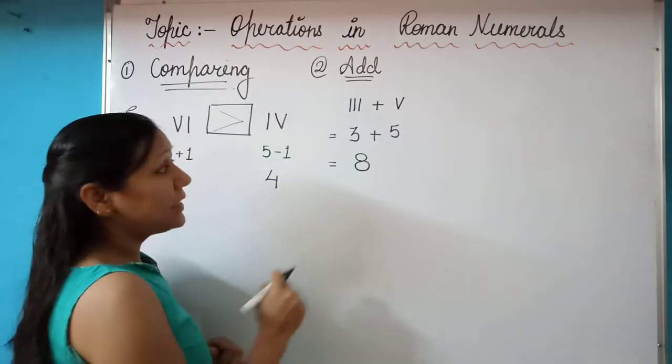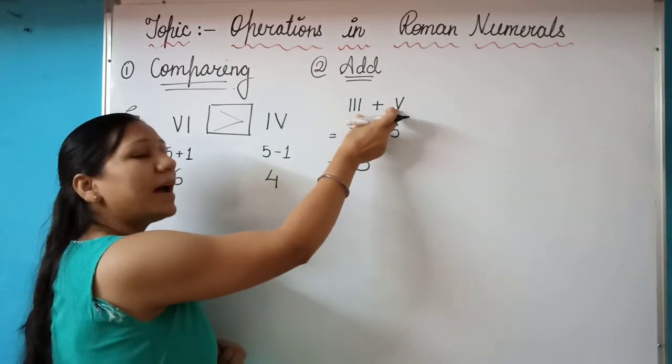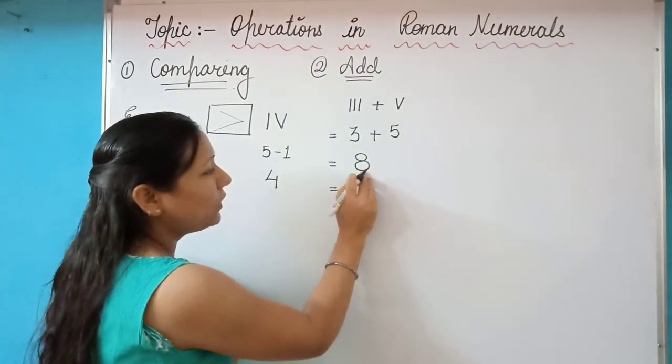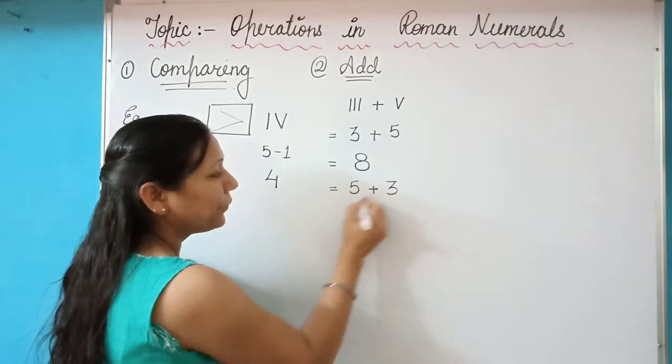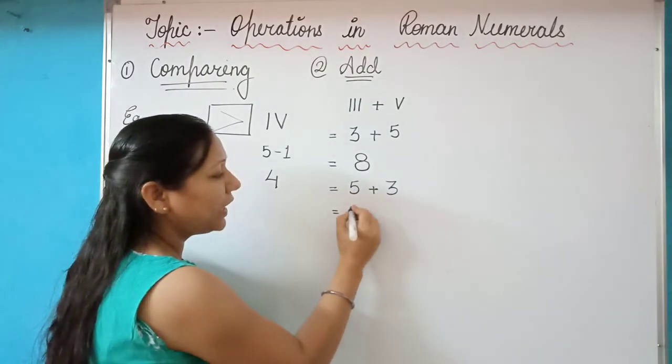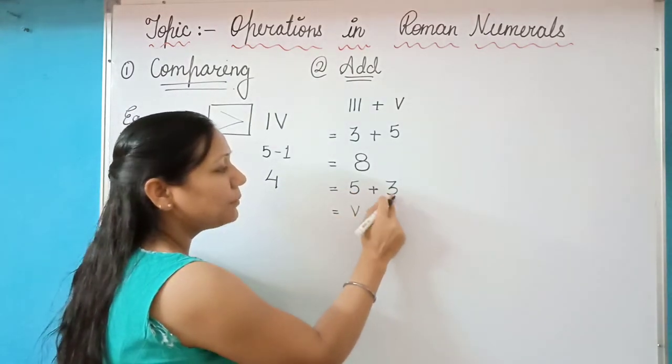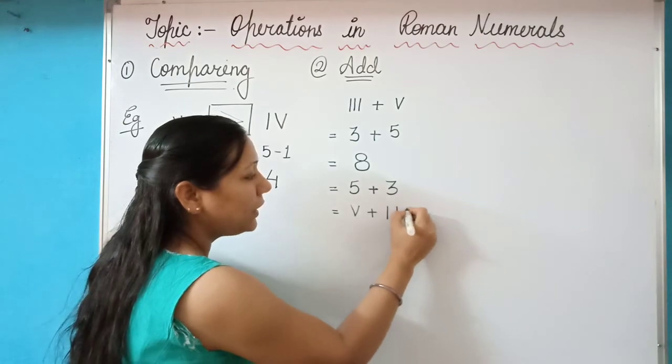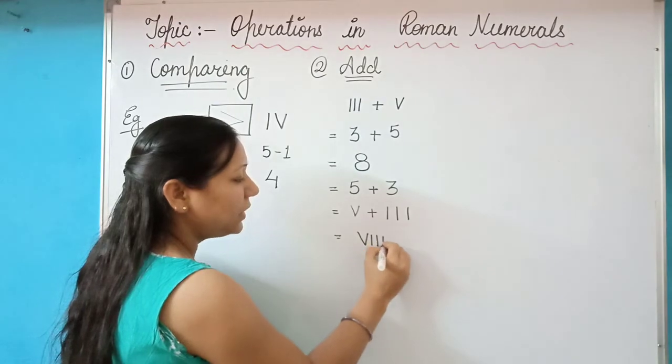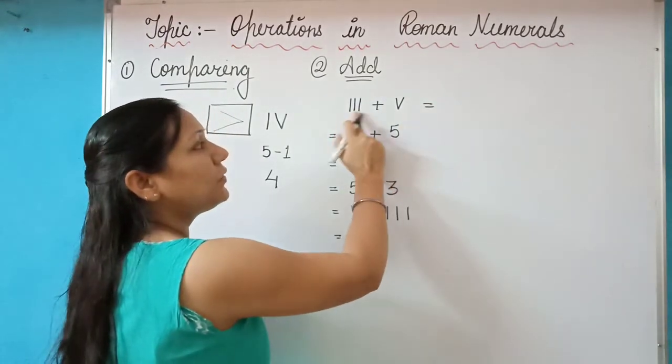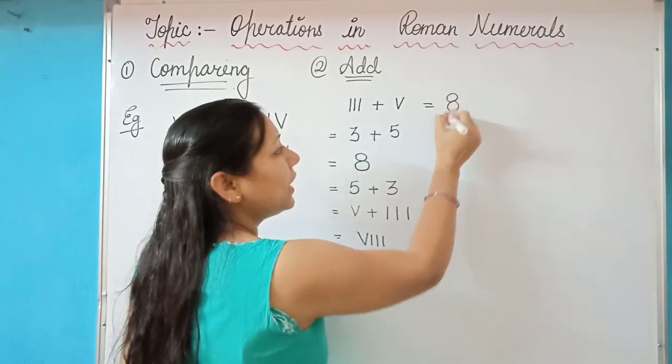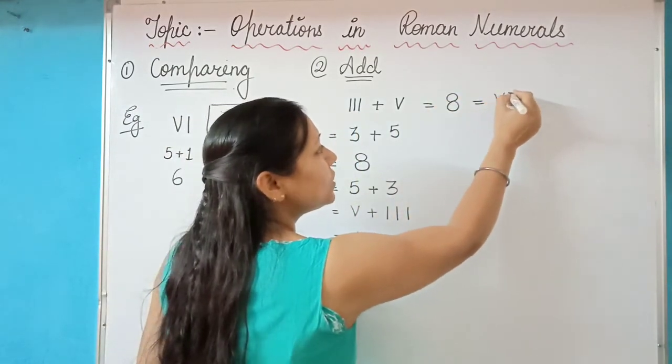Now, if it is said that you have to write the answer once again back to the Roman format, let us convert 8 into Roman format. That will be 5 plus 3. Very first, I will write 5 and then 3. The symbol for 5 is V and the symbol for 3 is III. Combining these two symbols it is VIII. That means the answer for 3 plus 5 which is III plus V is 8 which is equals to VIII.